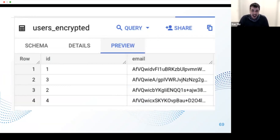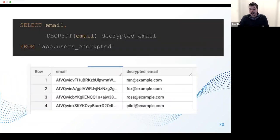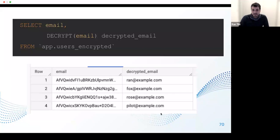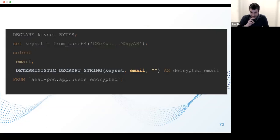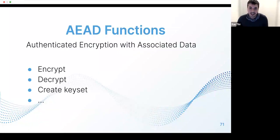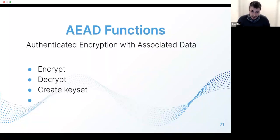You might say: but in some cases I do want to see the plain email. I'd like a function like SELECT DECRYPT(email) that decrypts the email on demand. Thanks to AEAD functions, we have this ability. AEAD functions are a list of built-in functions provided by BigQuery that give us the capacity to encrypt and decrypt data on demand at query time, and they also let us create encryption keys in a straightforward and simple way.